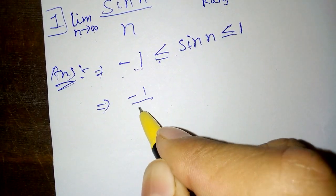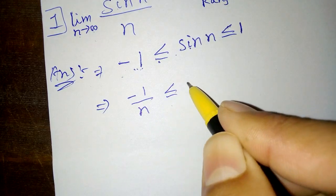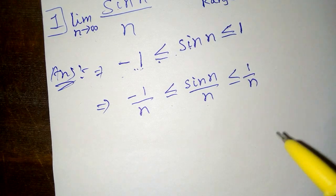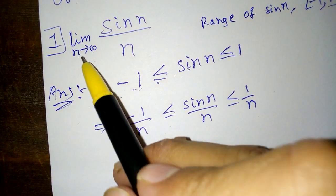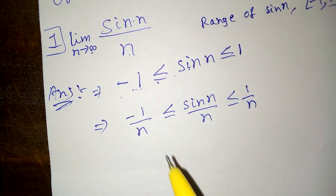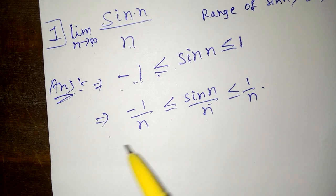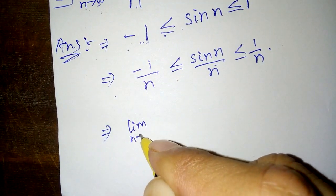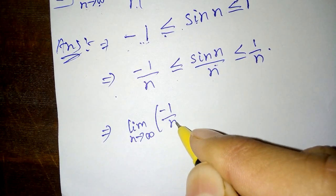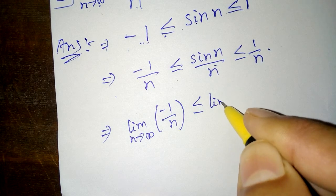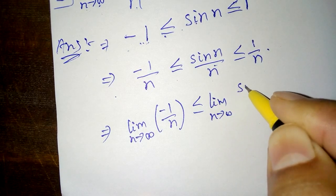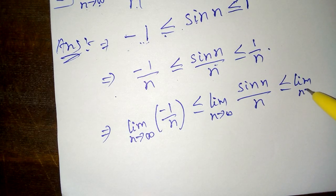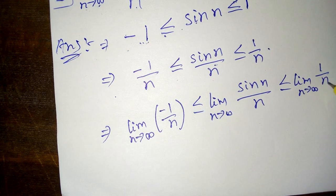Dividing by n gives: −1/n ≤ sin n / n ≤ 1/n. Since the problem asks for the limit as n tends to infinity of sin n / n, we apply the limit to the whole inequality to get: limit of −1/n ≤ limit of sin n / n ≤ limit of 1/n.